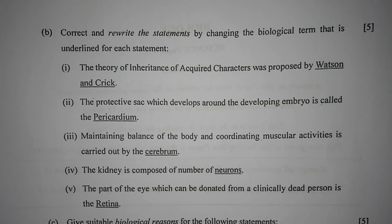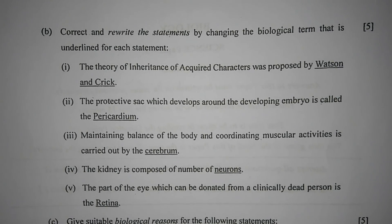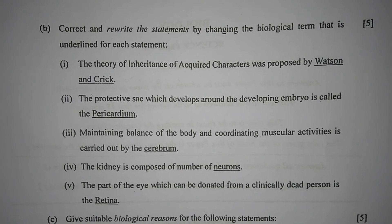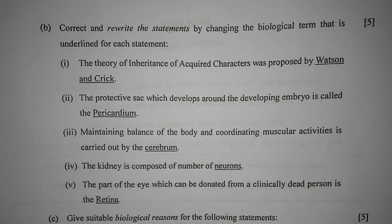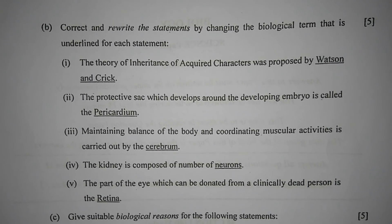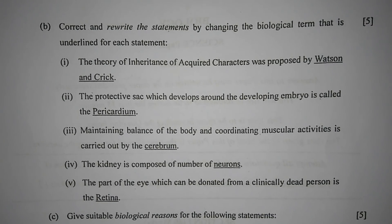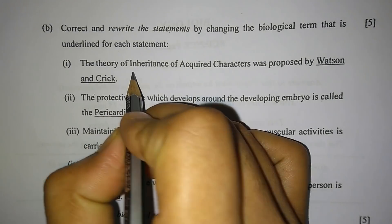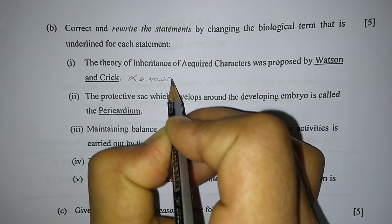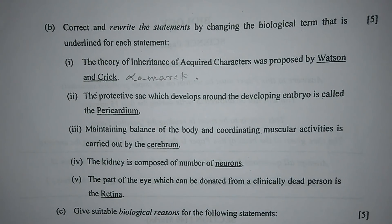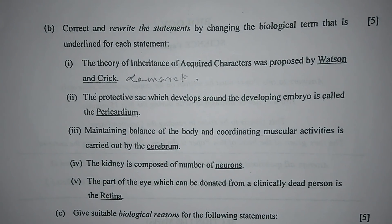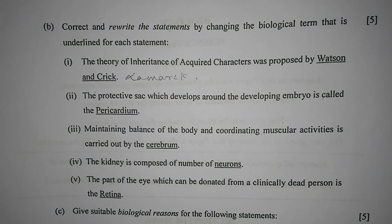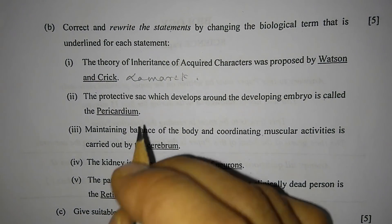Question 1b: Correct and rewrite the statements by changing the underlined biological term. Number 1 — the theory of inheritance of acquired characters was proposed by Watson and Crick. No, it was proposed by Lamarck. Number 2 — the protective sac which develops around the developing embryo is called the pericardium. No, it is called the amnion.